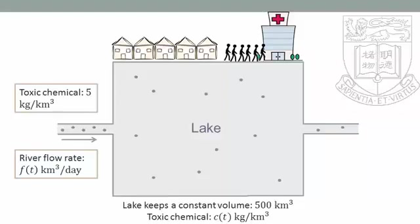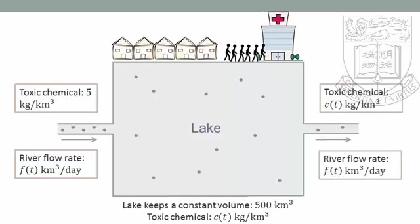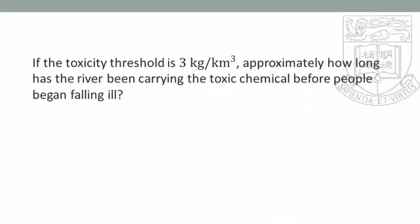Let the concentration of toxic chemical in the lake be C(t). Suppose that the 500 cubic kilometers lake maintains a constant volume and was initially clean. Since the lake maintains a constant volume, the rate of water flowing out must also be F(t). We can assume the water flowing out carries C(t) concentration of the toxic chemical, same as the lake. If the toxicity threshold is 3 kilograms per cubic kilometer, approximately how long has the river been carrying the toxic chemical before people began falling ill?